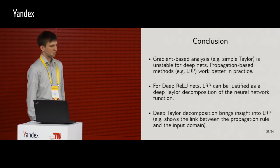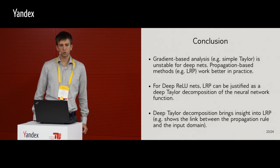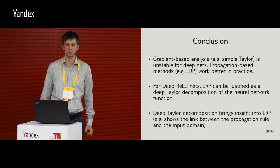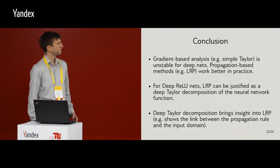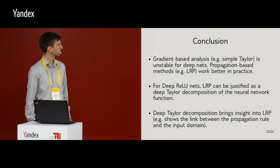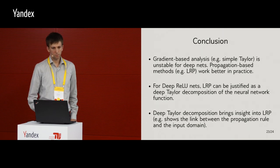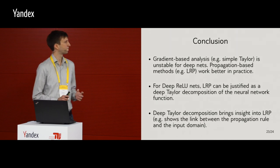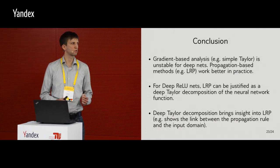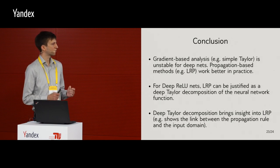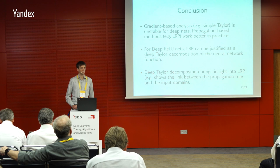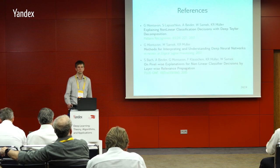So, on this I will conclude. There are, I think, three main messages. The first one is that gradient-based analysis is very unstable for deep networks and propagation-based methods work better. Then we provided this justification of LRP from the Deep Taylor perspective. It works for deep ReLU networks. And then what Deep Taylor brings to the picture is that it shows a link between the propagation rule and the input domain, and it allows you to build new rules based on this perspective and also to choose which rule is the most appropriate in which circumstance. Okay. So, I'm done. Okay, thank you very much.